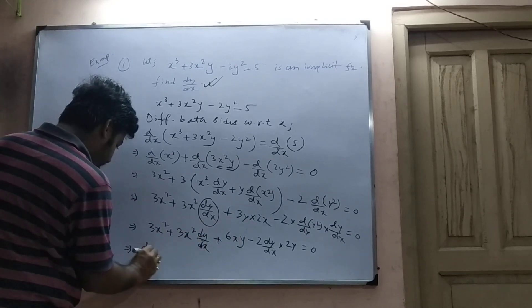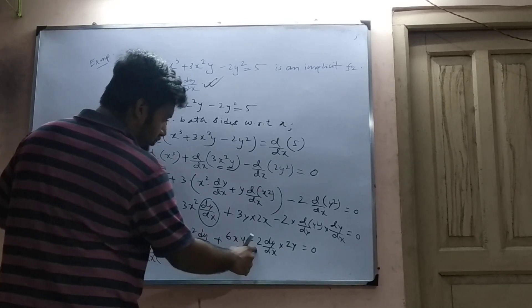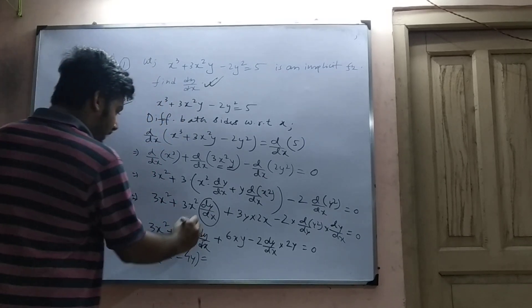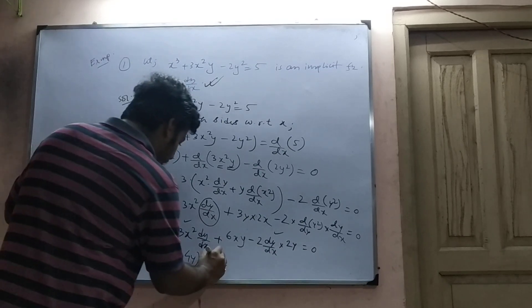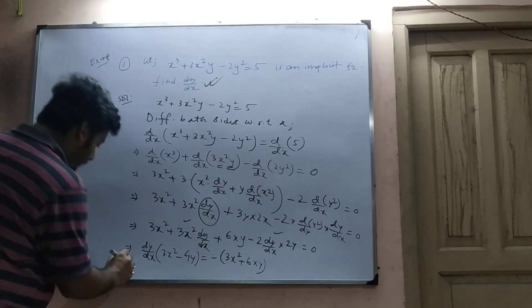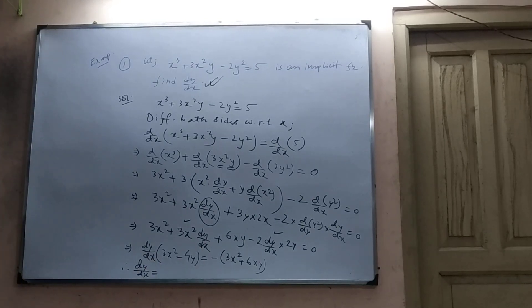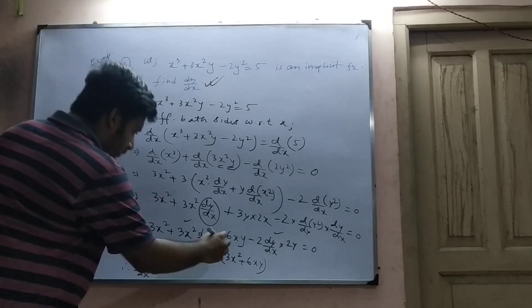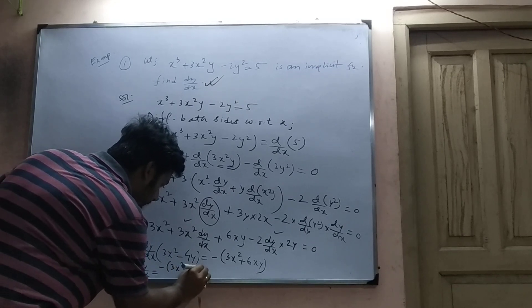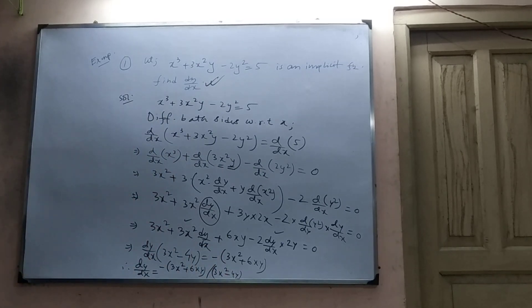Taking dy/dx common: dy/dx times (3x squared minus 4y) equals minus (3x squared plus 6xy). So dy/dx equals minus (3x squared plus 6xy) divided by (3x squared minus 4y).